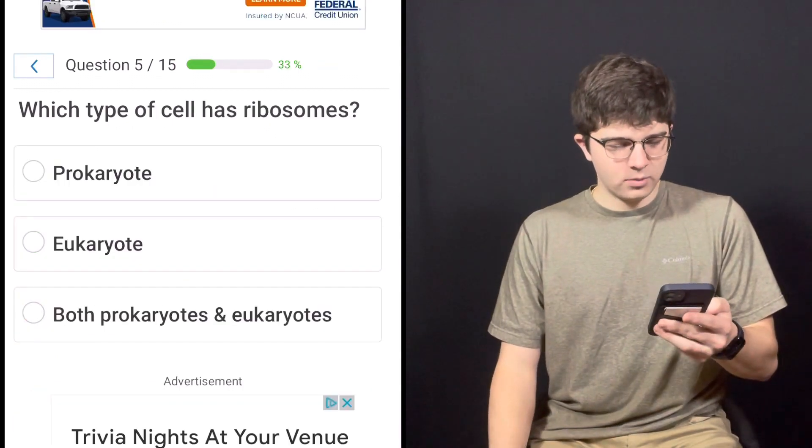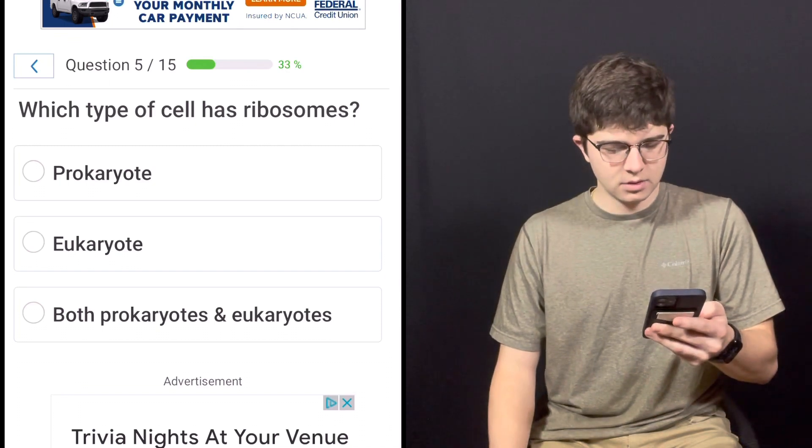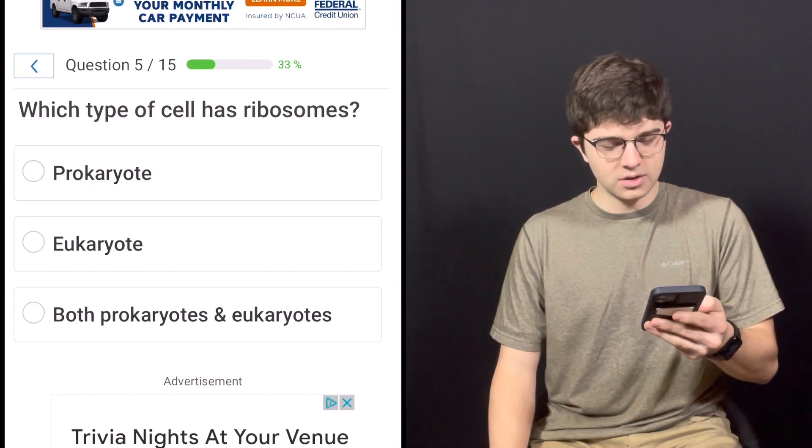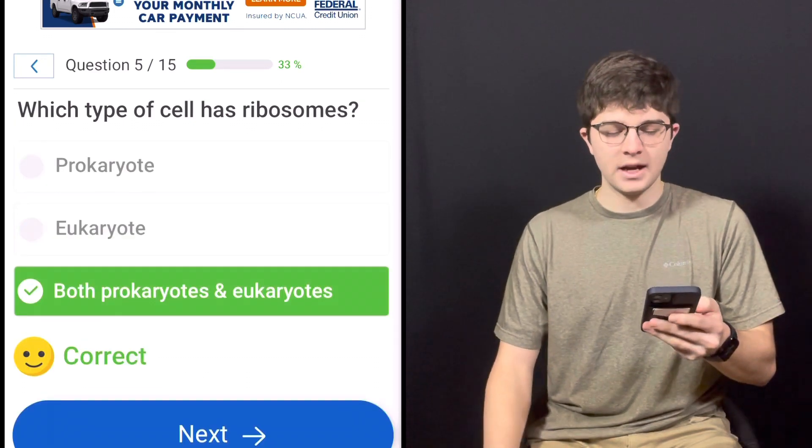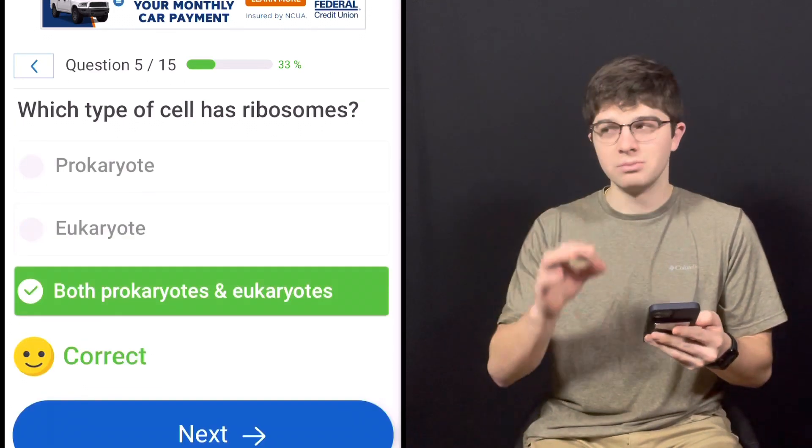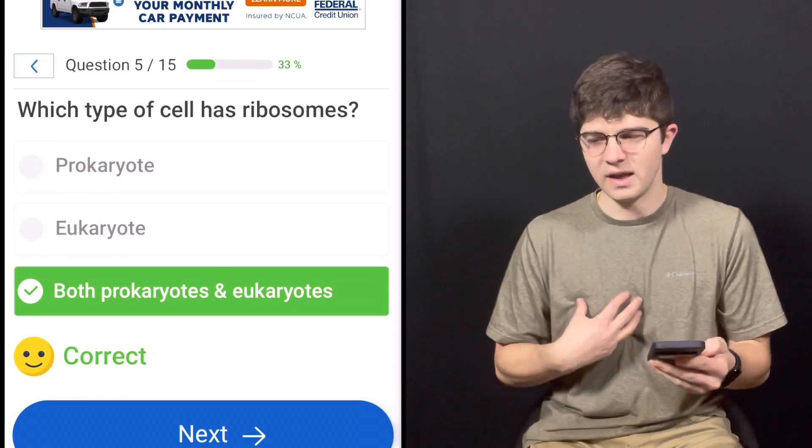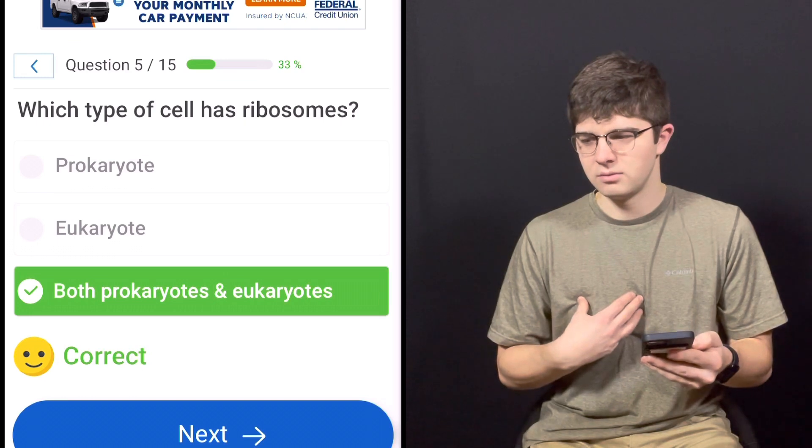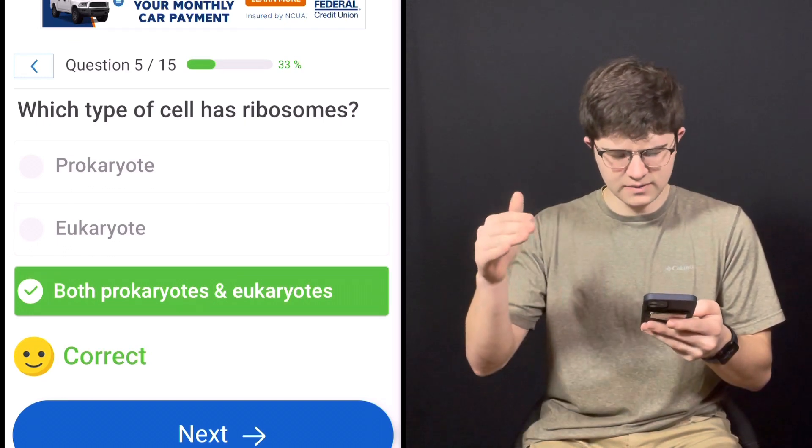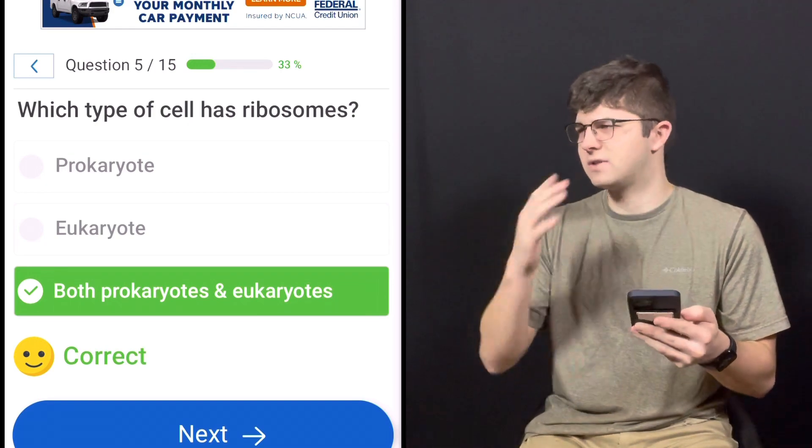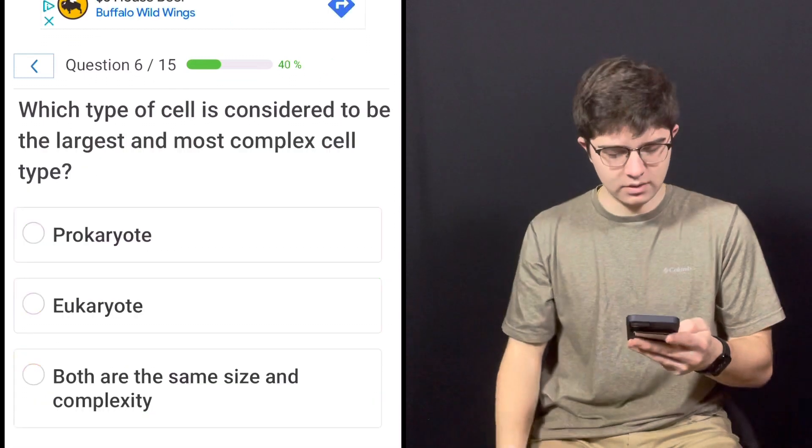Question number five. Which type of cell has ribosomes? Prokaryotes, eukaryotes, or both prokaryotes and eukaryotes? And it's both prokaryotes and eukaryotes. And actually, prokaryotes' ribosomes are smaller than eukaryotes. There's ribosomes in 65s and eukaryotes and 55s—it just reports the size. But yes, it's in both.